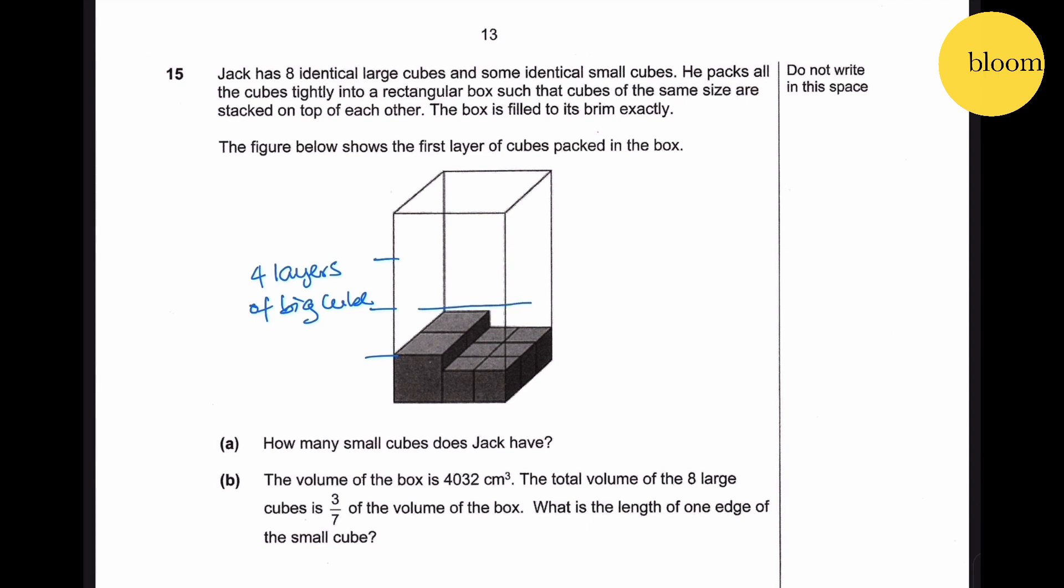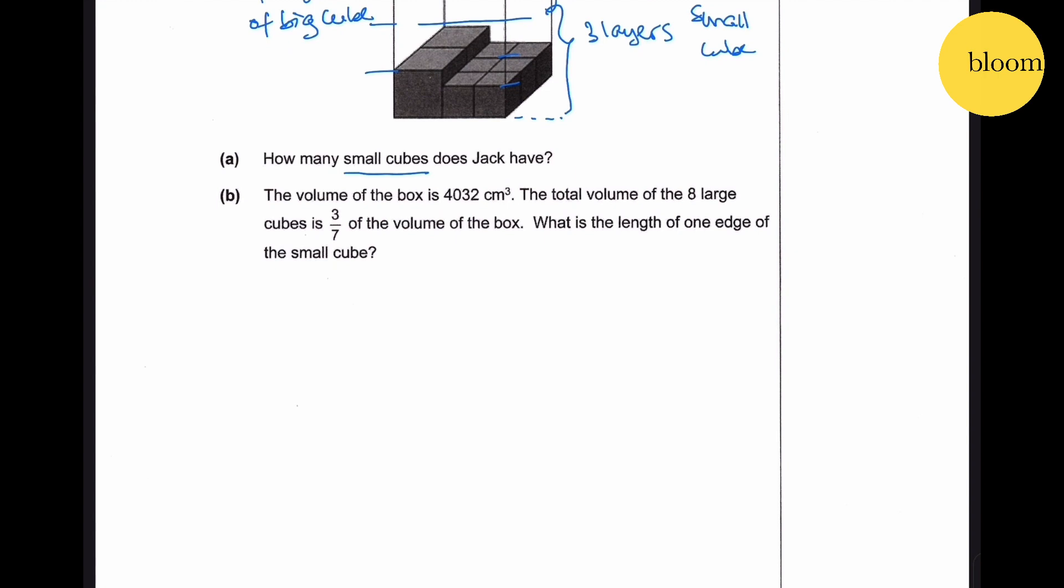And from here we estimate that each two layers holds three layers of small cubes. Therefore you have six layers of small cube. Each layer of small cube equals six cubes. Therefore total small cube is six layers by six cubes which is 36.